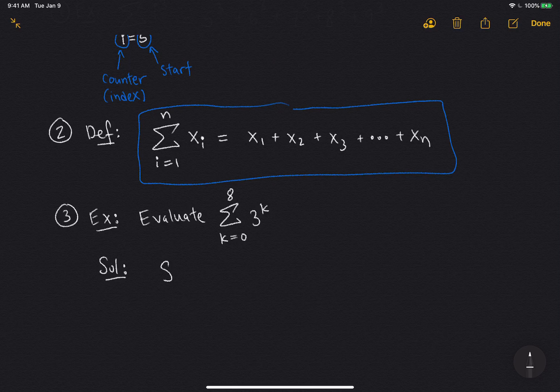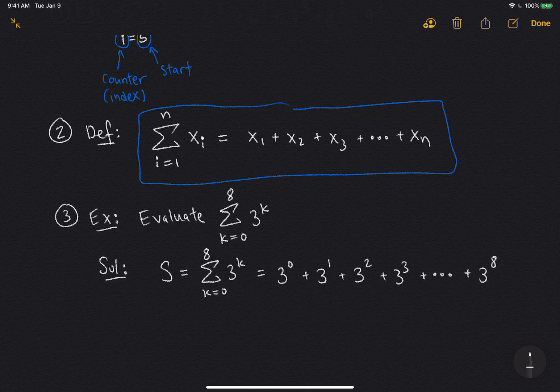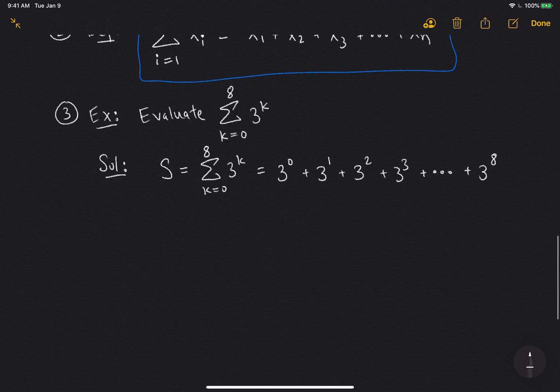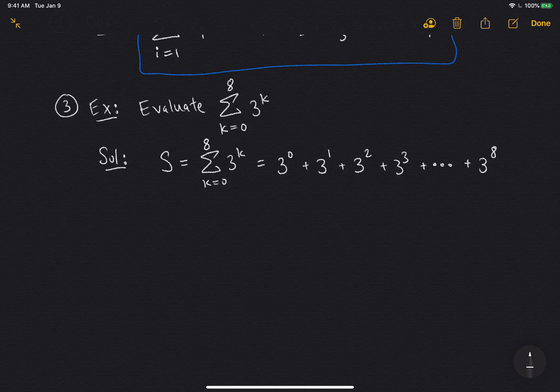So one way you could do it, let's call this thing S. And here's an inefficient way to do it. You could just start plugging in the numbers, right? So it starts at 0, so 3 to the 0. Then the next term would be 3 to the 1. And I'm just counting up, 3 to the 2, 3 to the 3, and I would just keep going until I get to 3 to the 8. So I don't want to evaluate all these exponentials and then add them up. That might take me too long, especially if I don't have a calculator.